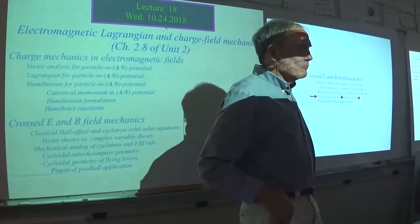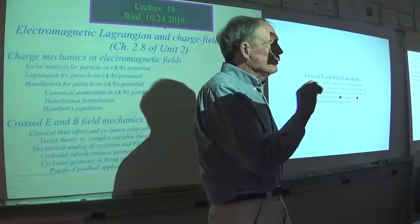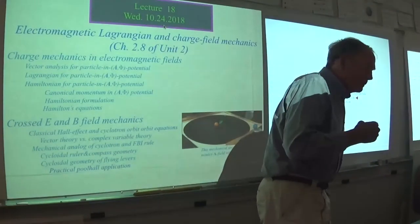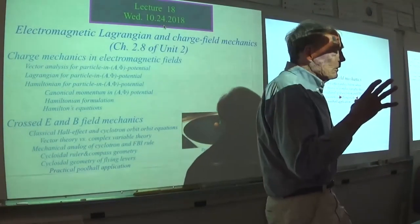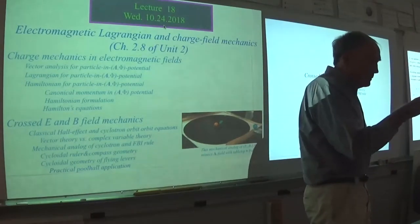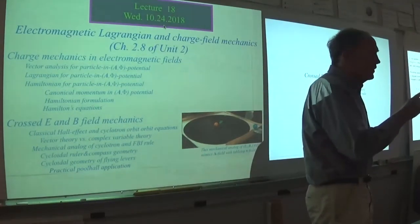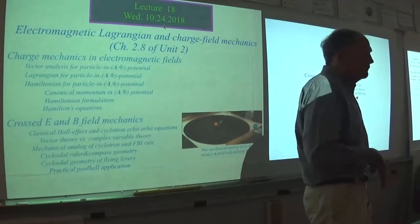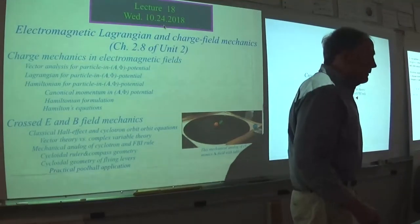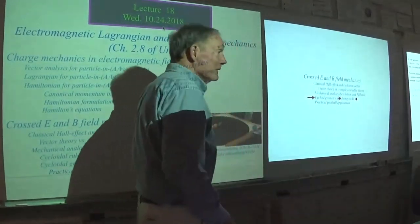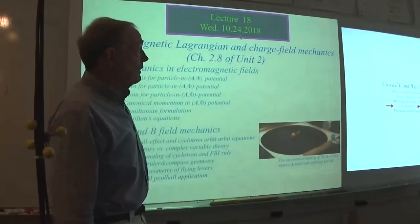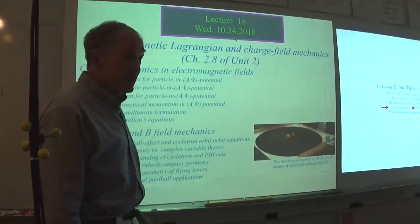You probably remember that one of the pieces of the derivation of Lagrange's equations — the rule against having any velocity dependence in the potential — was very strict. If you did have that, the whole thing broke down. Today we try to remedy that, in order to do a Lagrangian of electromagnetic interactions.